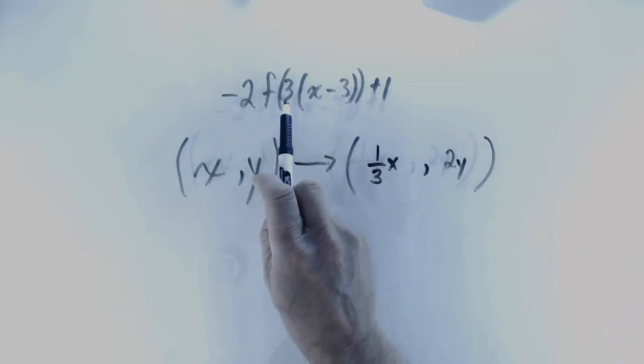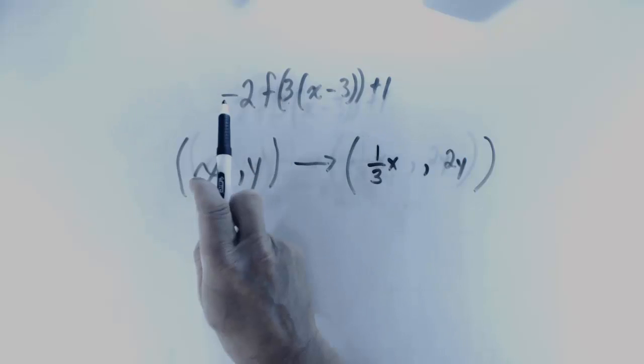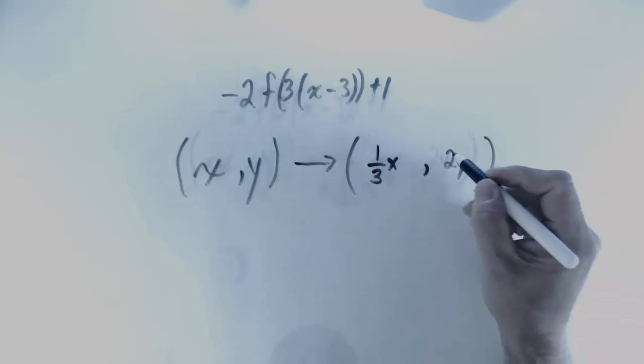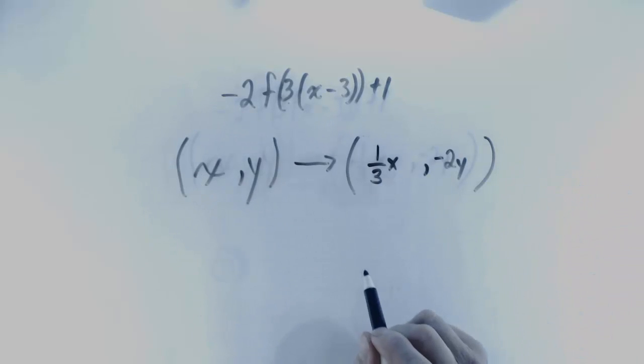There are no reflections in the y-axis because this is a positive value, but there is a reflection in the x-axis. When something is reflected in the x-axis, the sign of the y coordinate changes.